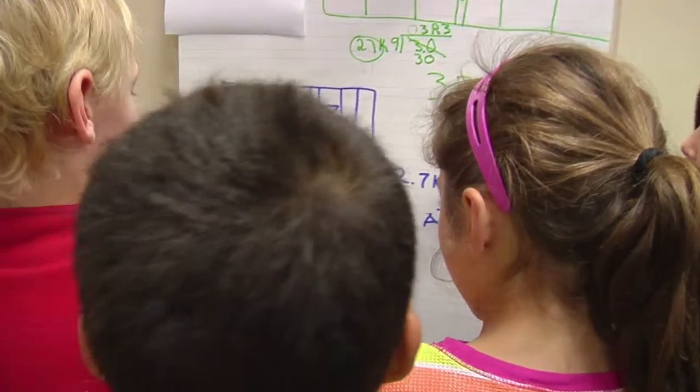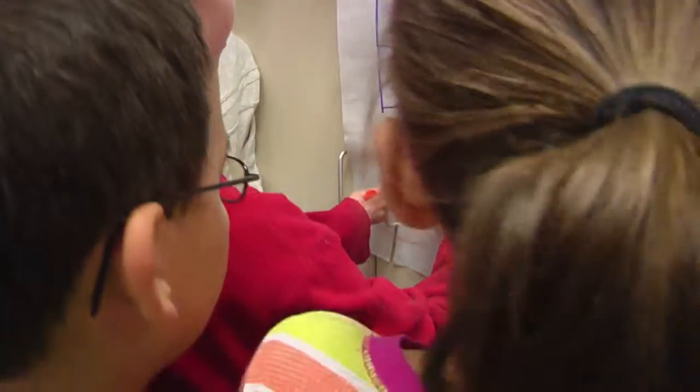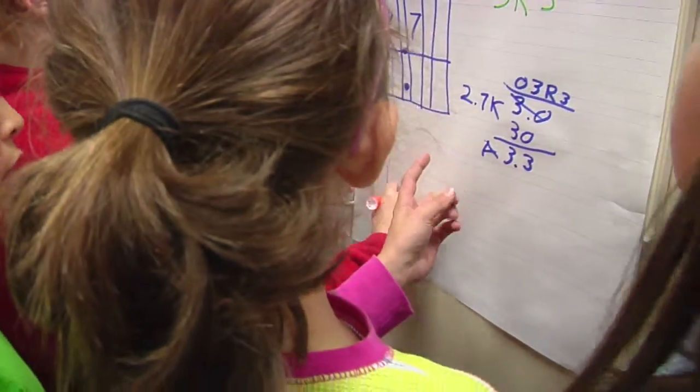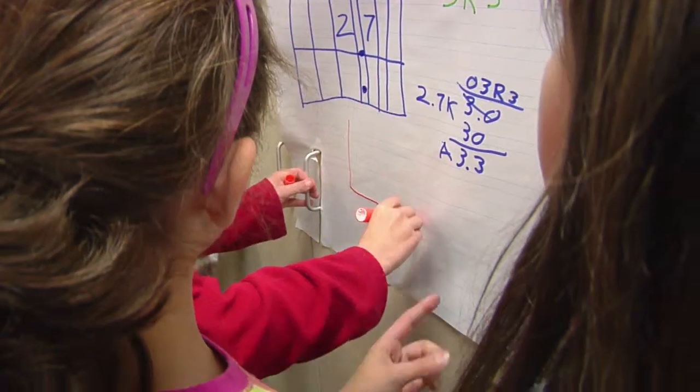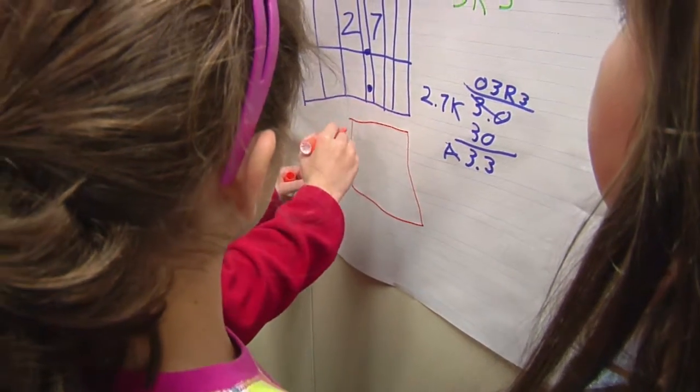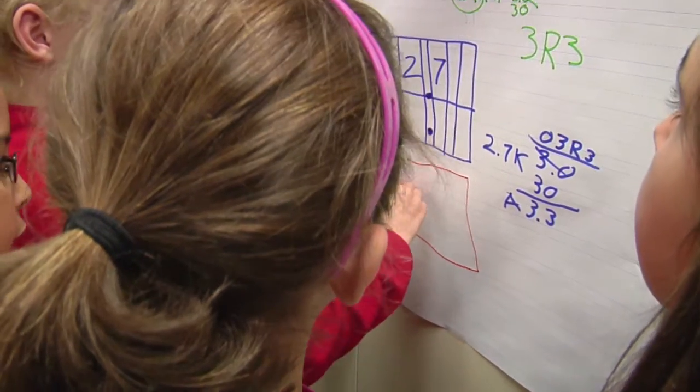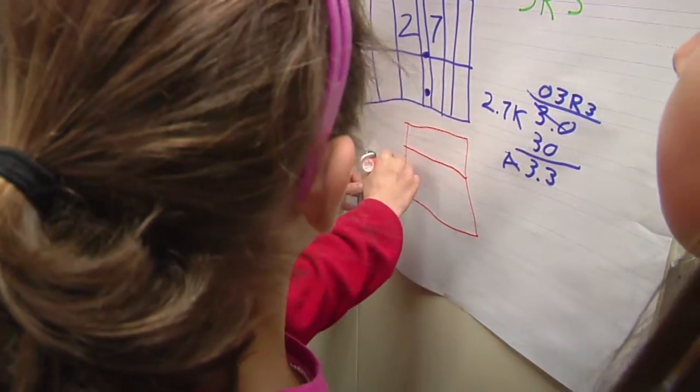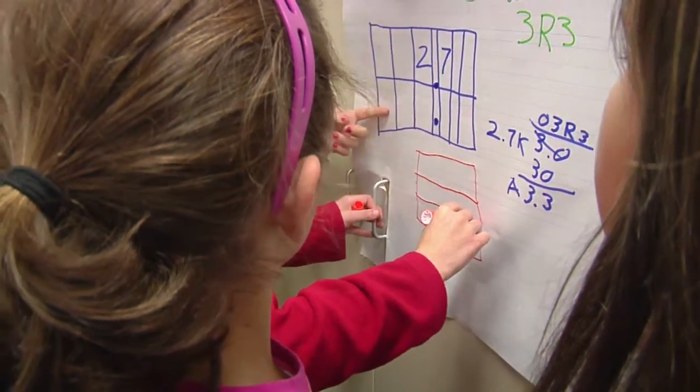Okay, so draw a place value chart down there. Wouldn't it be, yeah, how would it be 2.7 or 2.7? Oh, 2.7 kilometers, okay, okay. That's so, you should have made it bigger. Okay, so let's go.